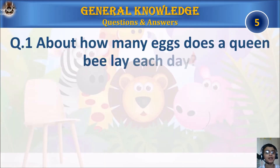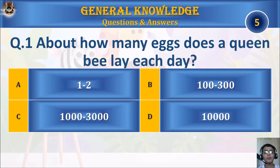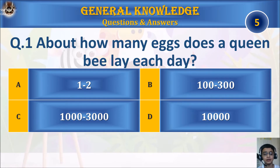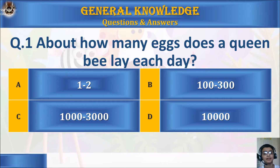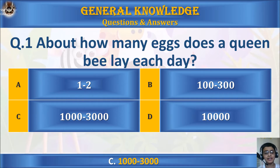Question 1: About how many eggs does a queen bee lay each day? A: 1 to 2 eggs. B: 100 to 300 eggs. C: 1,000 to 3,000 eggs. Or D: 10,000 eggs. Your time starts. The answer is C: 1,000 to 3,000 eggs.